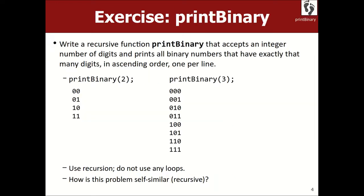Let's write a function called printBinary that prints all of the binary numbers with a certain number of digits — zeros and ones. You can follow along in Qt Creator. At first glance this might not look like you need recursion at all, and you technically don't. You could just do a loop up to 2 to this power and print every integer. But what if you have to do it recursively and you're not allowed to use loops? How do you do it?